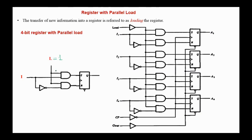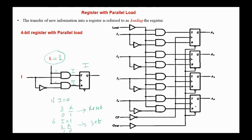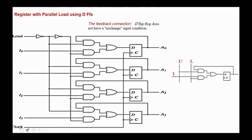When load control equals one, we have one here and one here. So the output of the first AND gate equals I, and the output of the second AND gate equals NOT I. In this case, if I equals zero, then S and R are zero and one, which is the reset state. And if I equals one, then S and R are one and zero, which is the set state. From this stage, it's obvious that when load is one, the whole register will store the data applied to its input.